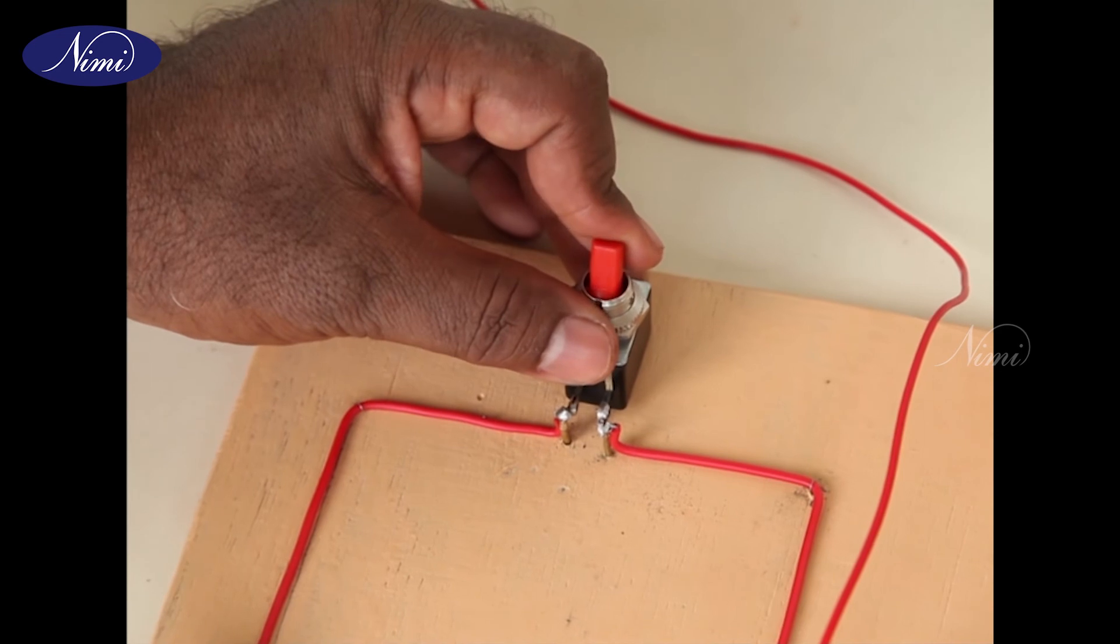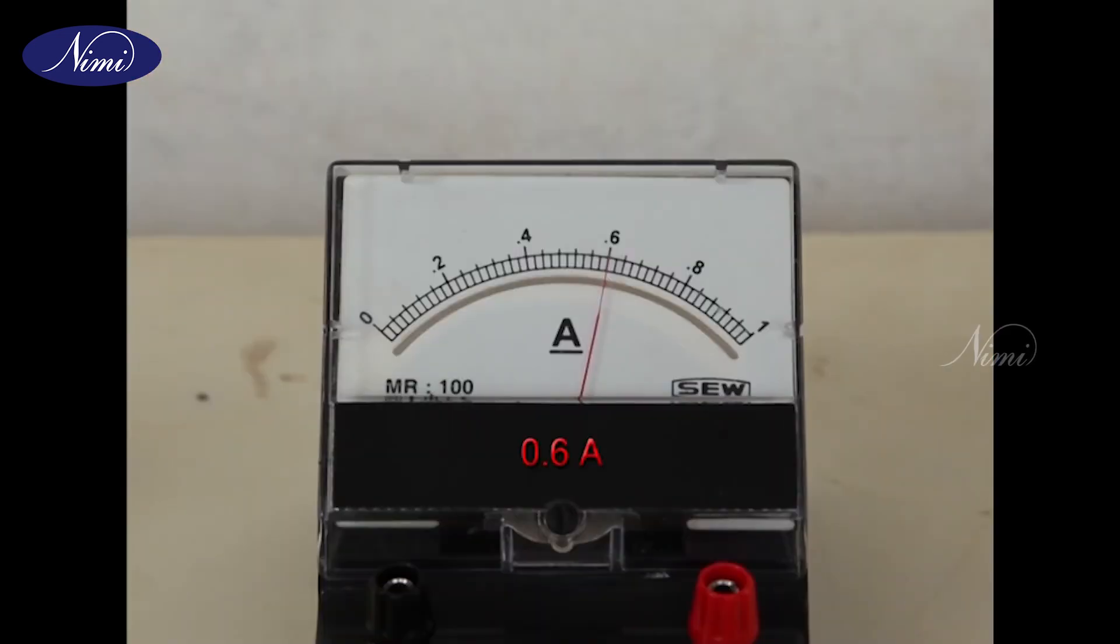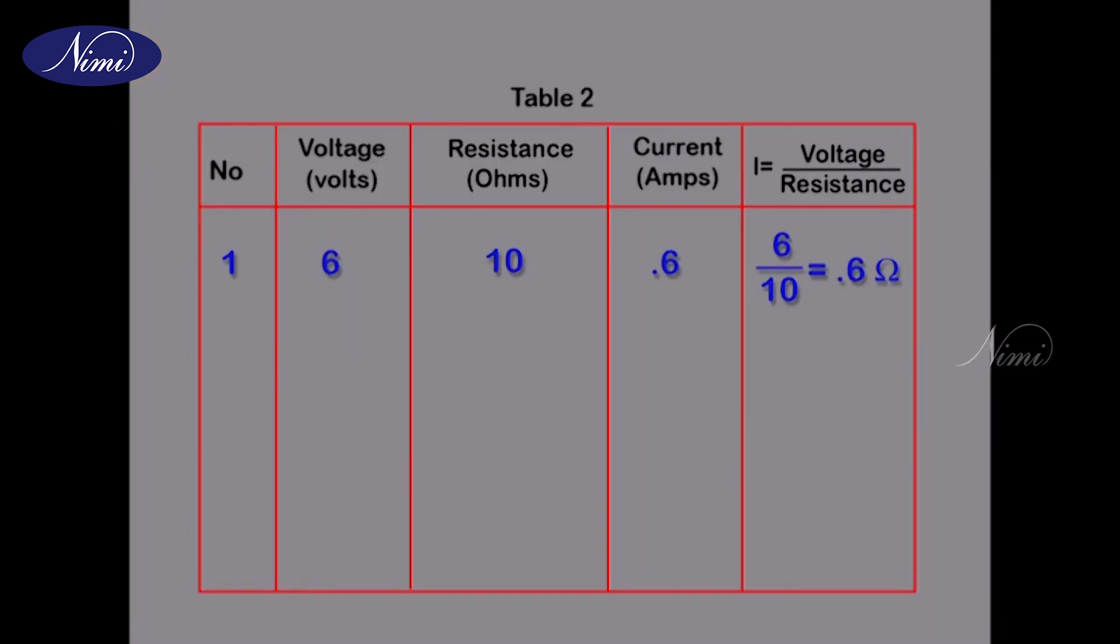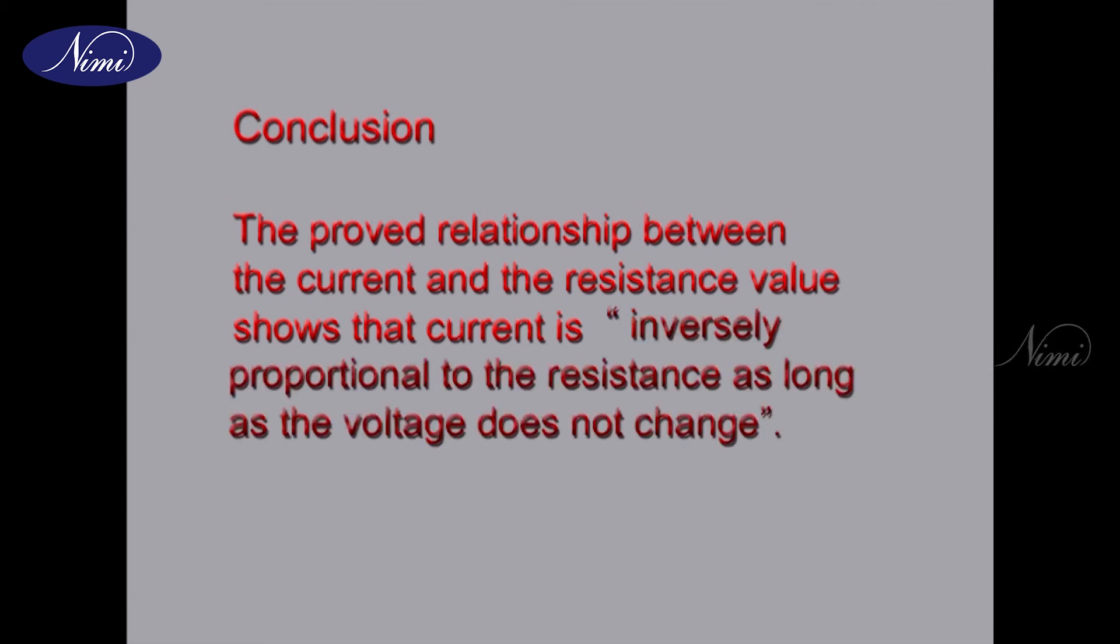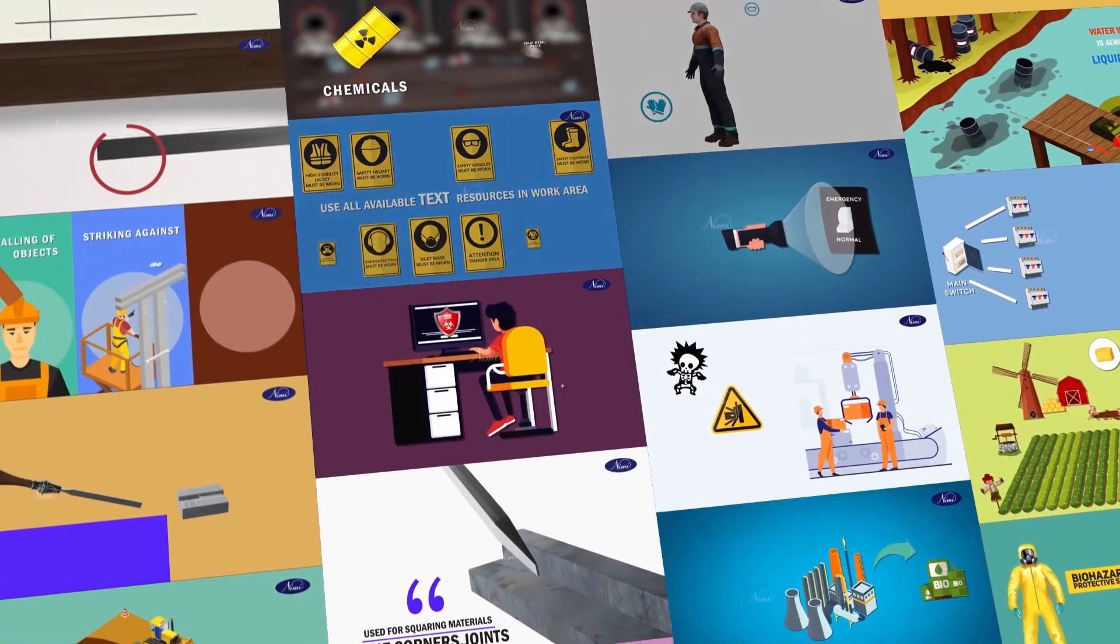Step 2: Close the switch and measure the current and voltage. Step 3: Record the values in Table 2. Conclusion: The proved relationship between the current and the resistance value shows that current is inversely proportional to the resistance as long as the voltage does not change.